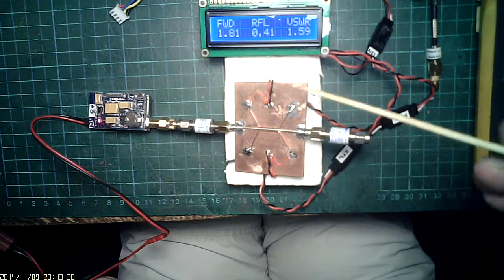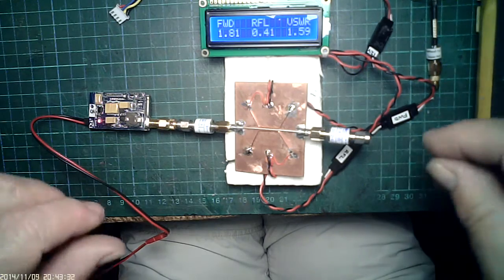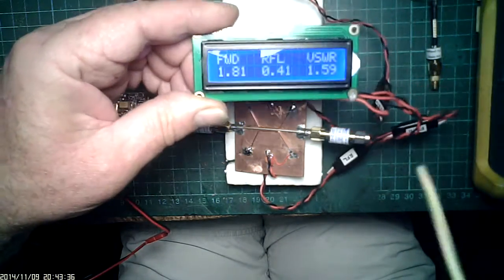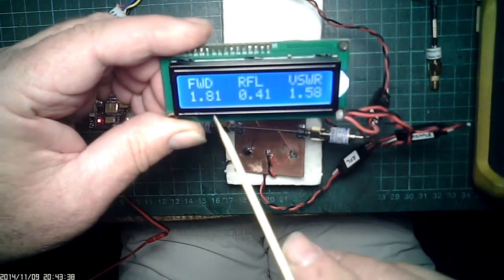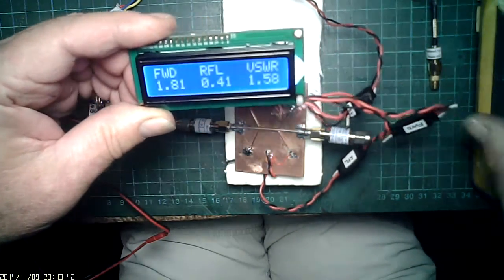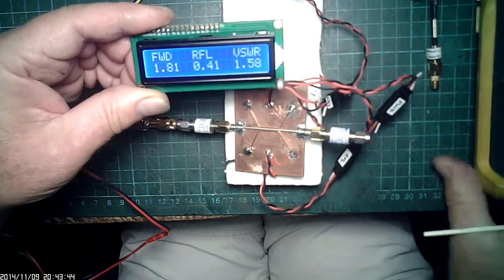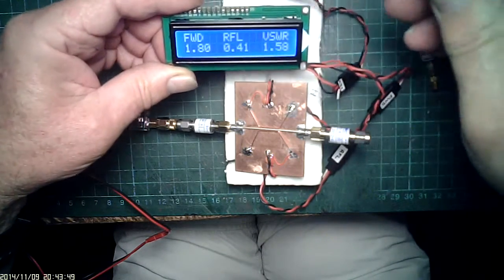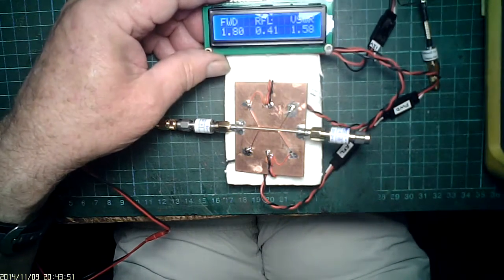1.81 volts forward, 0.41 reflected volts. I've also checked that with the Fluke voltmeter and these readings are correct.